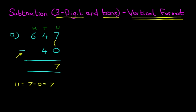Next we have the tens. We have 4 minus 4. Well we're subtracting the same number therefore the answer is 0. And lastly we've got the hundreds. And for the hundreds we have 6. 6 minus 0 is 6. So 647 minus 40 equals 607.